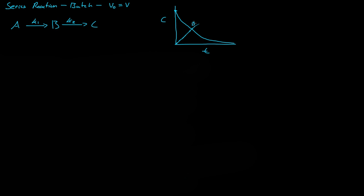Once we start getting some B, we also get some C. What we see is as B is produced, we get more and more C until at the final time we get all C. So A and B both go to zero as time keeps going. But we get our greatest concentration of B at a specific point, which we're going to call T max.